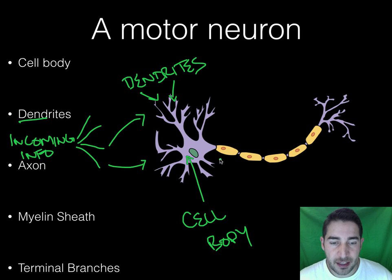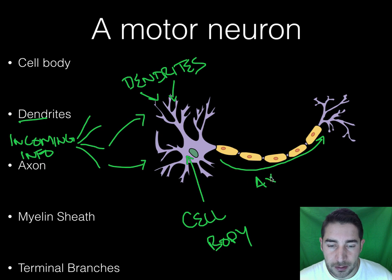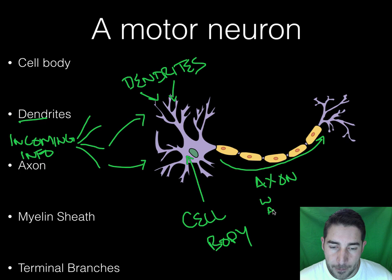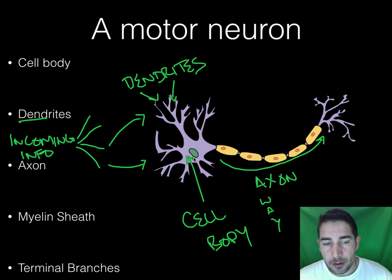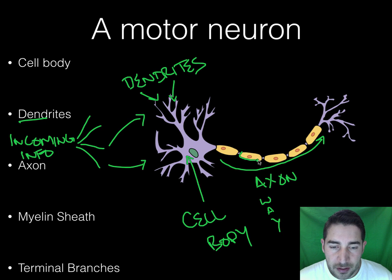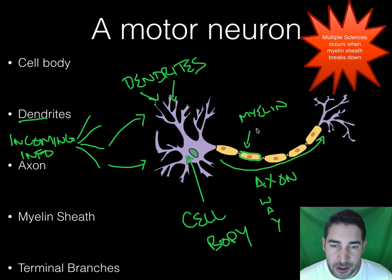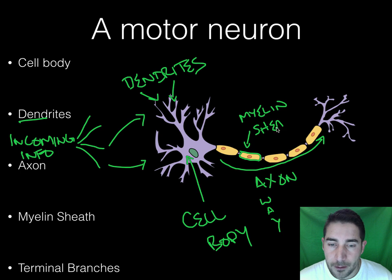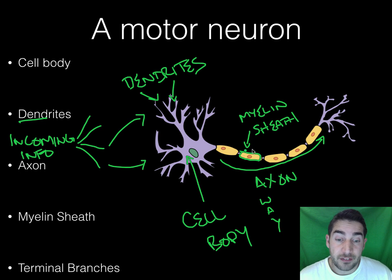Once the dendrites receive that information, it gets sent down this part right here — the axon. The axon always sends information away from the cell body. Axon = away. It takes the information received, processes it, and sends it out away from the cell body. Wrapped around the axon you can see these little coverings — these are called the myelin sheaths. They're like speed boosters: they protect the axon and help information travel much faster, acting as an insulator so signals zoom right through at a much greater speed than if the axon were exposed.